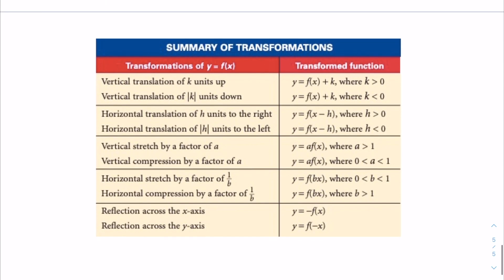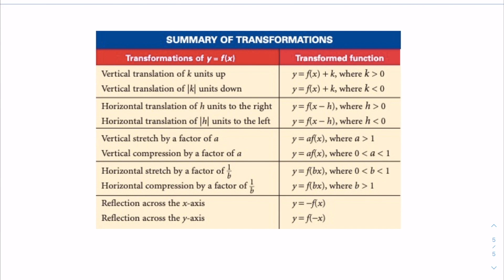Overall, the summary of transformations: vertical translation of k units up and vertical translation of the absolute value of k units down, where y equals f of x plus k for k greater than zero and y equals f of x plus k for k less than zero. Horizontal translation of h units to the right or the absolute value of h units to the left, where y equals f of x minus h for h greater than zero and y equals f of x minus h for h less than zero.